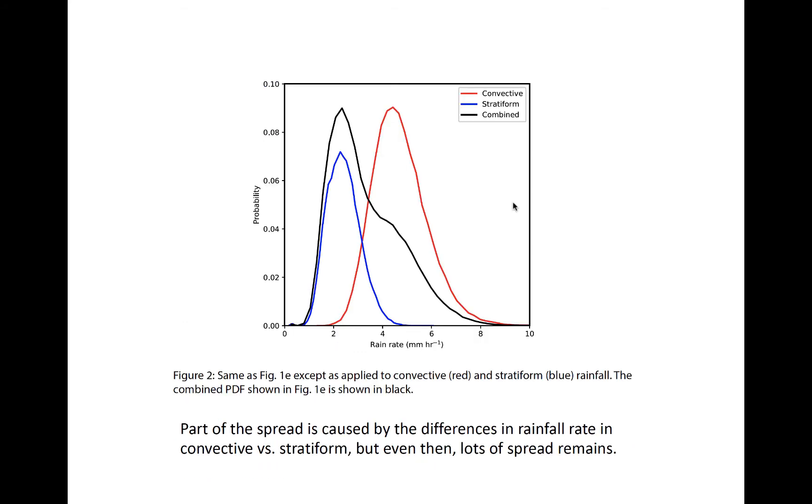Precipitation can occur in regions of strong vertical motion, which is often alluded to as convective rainfall, or regions of weaker vertical motion, which is called stratiform rainfall. And in this plot, convective is red, stratiform is blue.